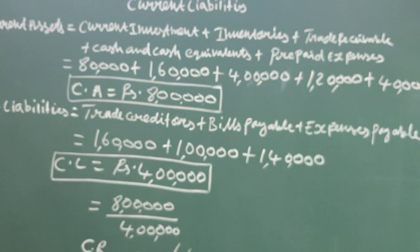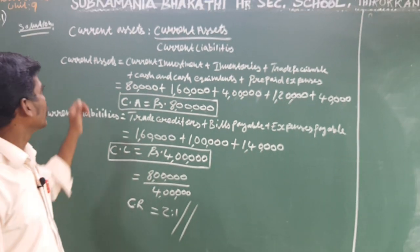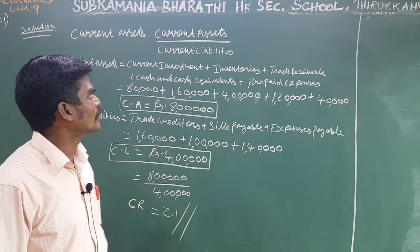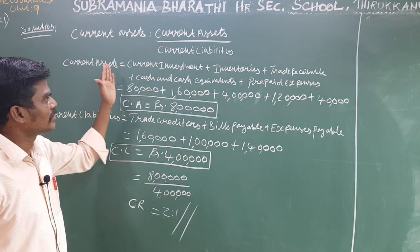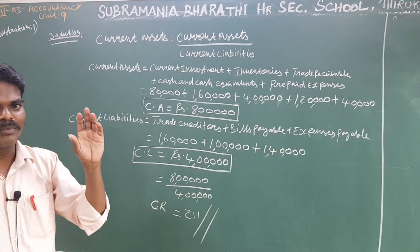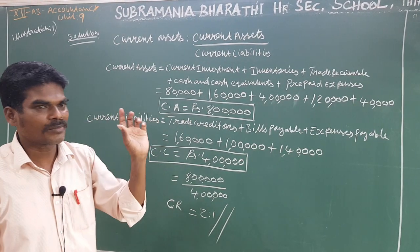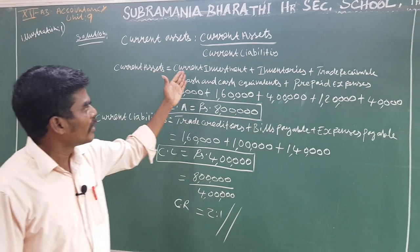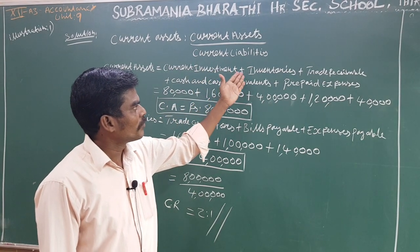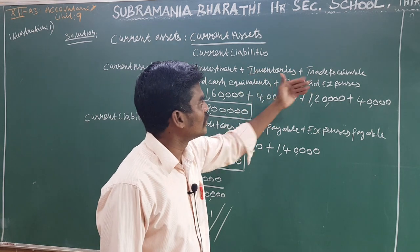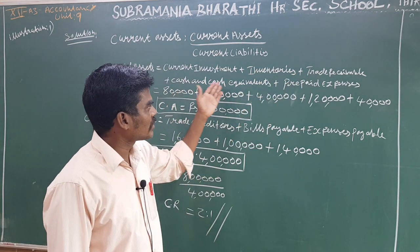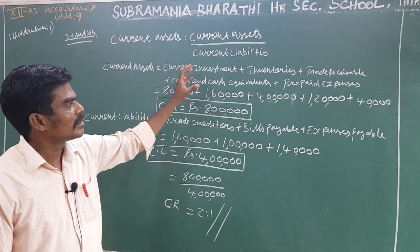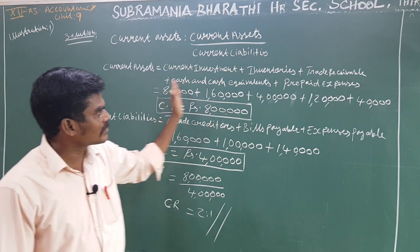Now, the current ratio formula is: current ratio equals current assets divided by current liabilities. Current assets include current investment, inventory, trade receivable, cash or cash equivalent, and prepaid expense.